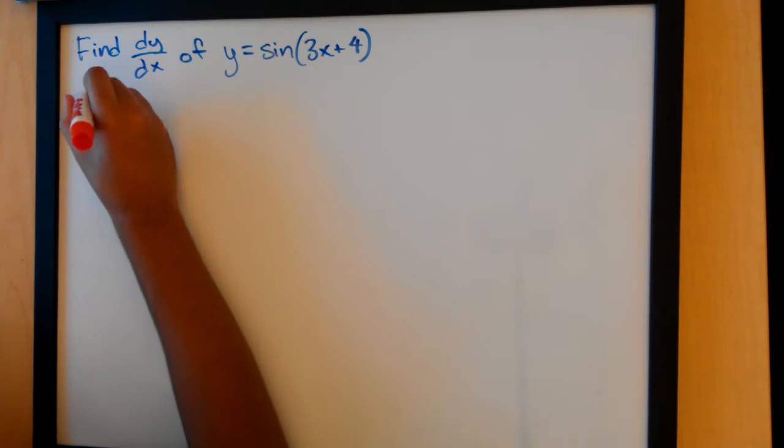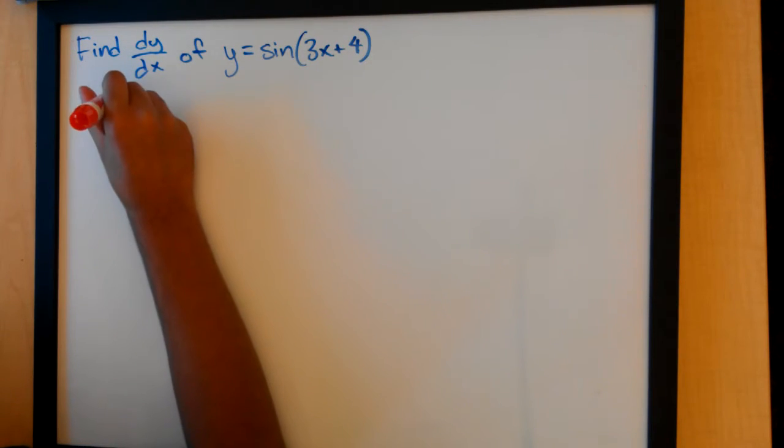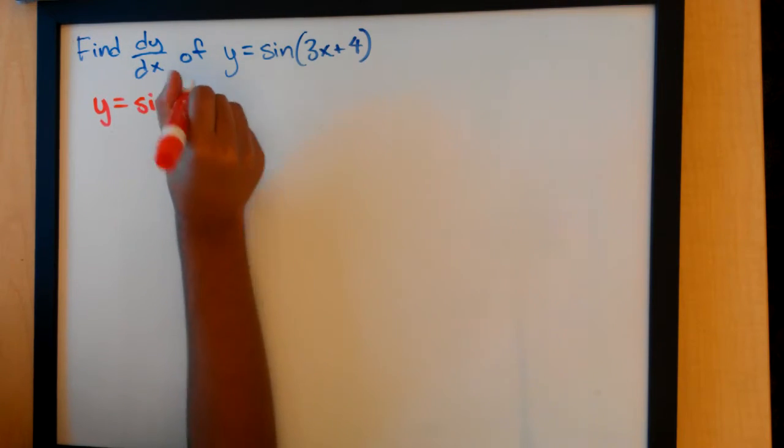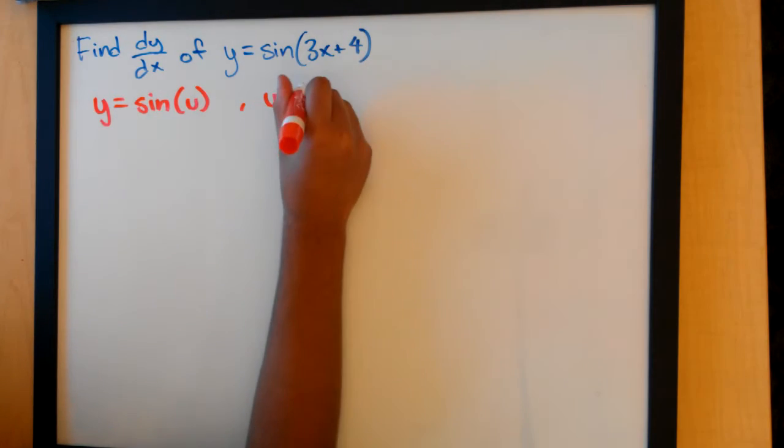And so the first step I'm going to do is, instead of 3x plus 4, I'm going to say y equals sine of u, where u equals 3x plus 4.